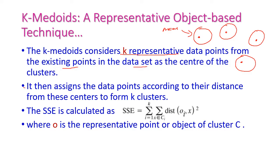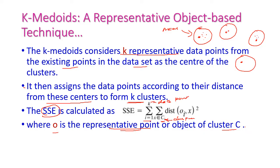It then assigns all data points according to their distance from these k cluster centers. We compute the sum of squared error, SSE, defined as: SSE = sum from i=1 to k, for all x belonging to cluster Ci, of distance(oi, x) squared, where oi is the representative object of cluster Ci. For every iteration, the center point changes, and the iteration repeats until there is no change in the center point across all clusters.